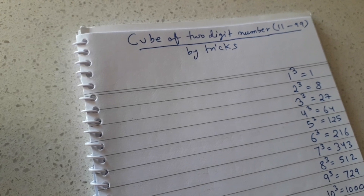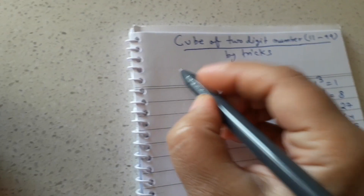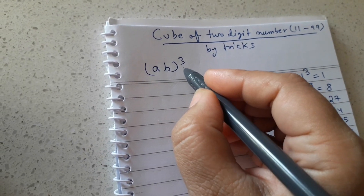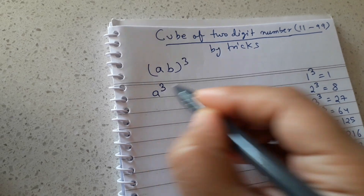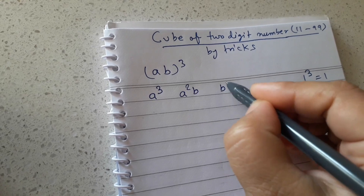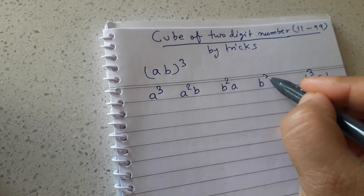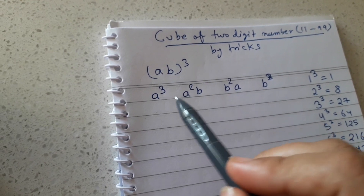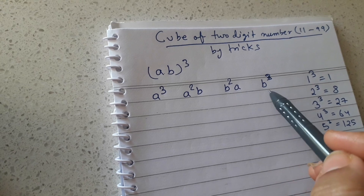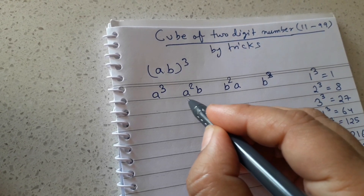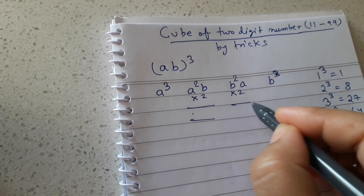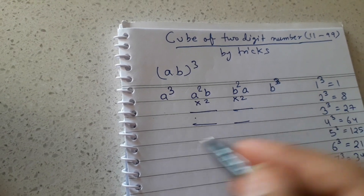Let's see the trick. For any number written as (a b), the first step is: write a³, then a²b, then ab², then b³. Whatever the number is, we follow this pattern. The next step is to multiply the middle two terms by 2 and write them in the middle positions.